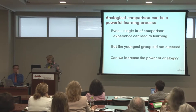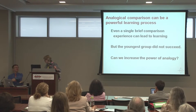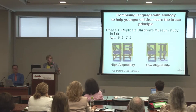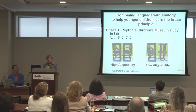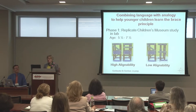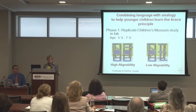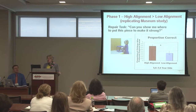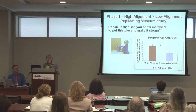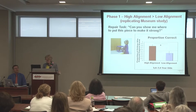We also asked, could we beef this up a bit — could we get the youngest kids to do better? This was a study we did in the lab where we added a spatial language manipulation, done with Micah Goldwater. We ran just two groups: high alignability and low alignability. We first replicated what we did in the museum — just gave them two buildings, said which one is strong, they wiggle them. And then after a short delay, we let them put in a piece to a new building. Indeed, the ones who got high alignment are more likely to use a diagonal when they repair a new building.